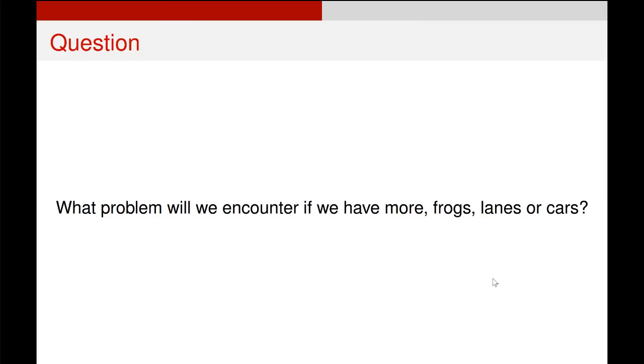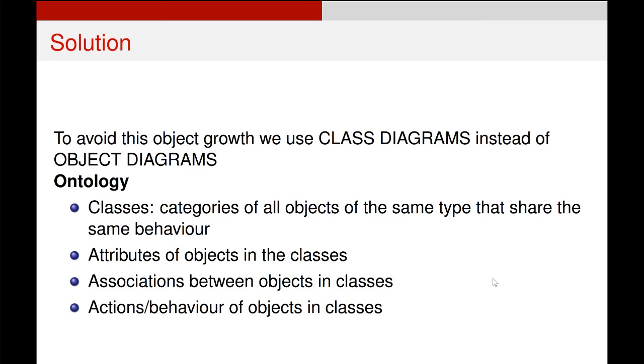So what we're going to do instead is we're going to generalize these objects into broader classes. This is a process called abstraction which we've seen a lot of before, and then we're going to describe the system using that abstraction because that allows us to have as many lanes, cars, frogs or other objects as we want.